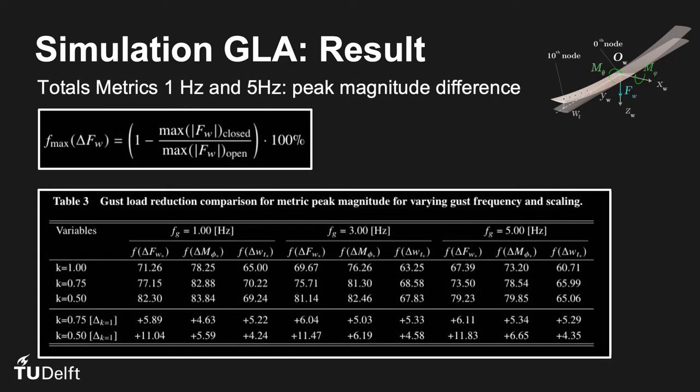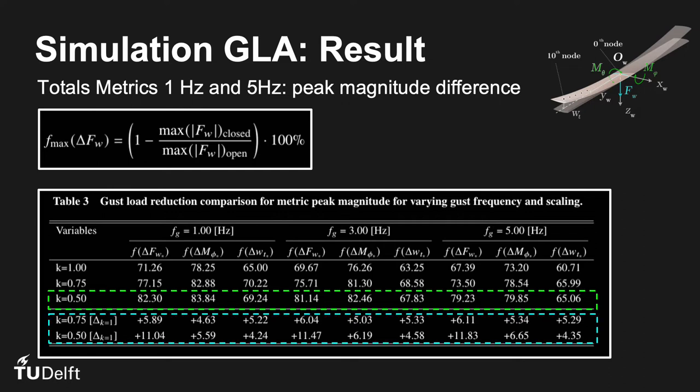This table summarizes all simulation results for varying scaling parameter and gust frequency, represented by rows and columns respectively. The percentage difference shown yields load reductions of up to 75% for closed-loop in nominal actuator configuration. Looking at k is 0.5, the green box, we see that up to 84% reductions are achieved for faster actuator yielding superior results over the nominal and improvements by 11%. This is shown in the last rows of the tables which indicate the deltas, differences with respect to the nominal.